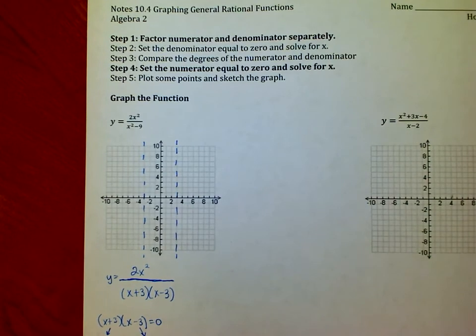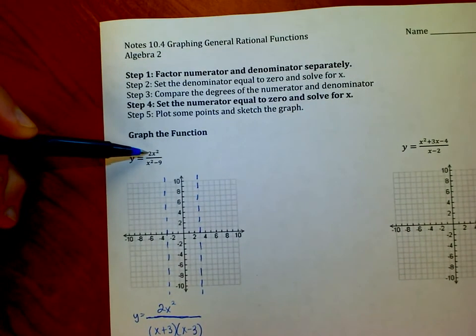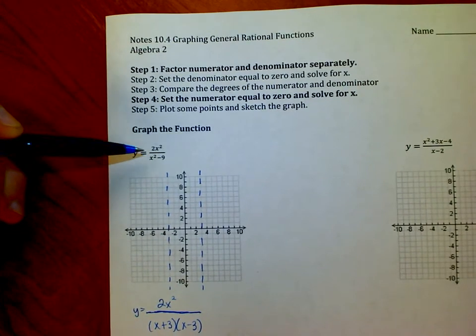Next thing we're going to do is compare the degrees of the numerator and denominator. It's easier really to see up here when it's already been foiled out. I have x² on top and x² on bottom. Those are the same degree.